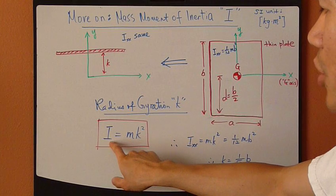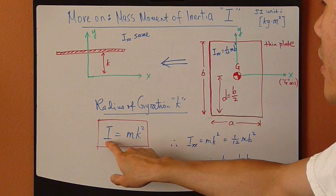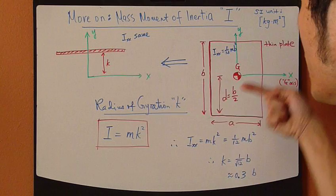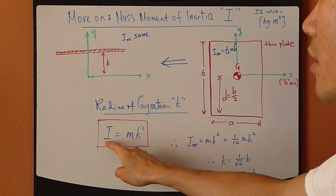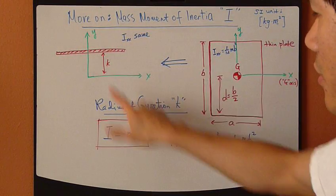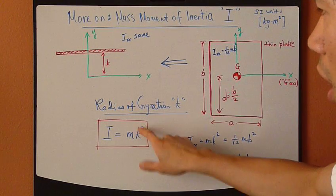So the equation now comes, the moment of inertia about some axis, in this case the x-axis that we're interested in, equals mass of the object times radius of gyration squared.